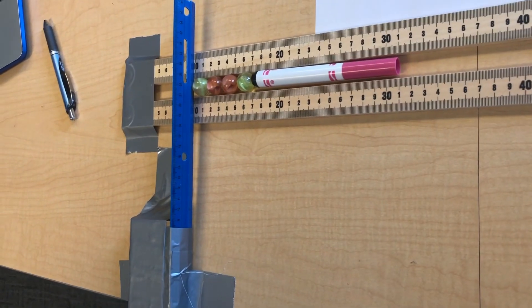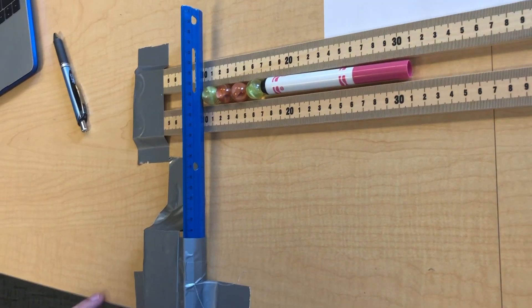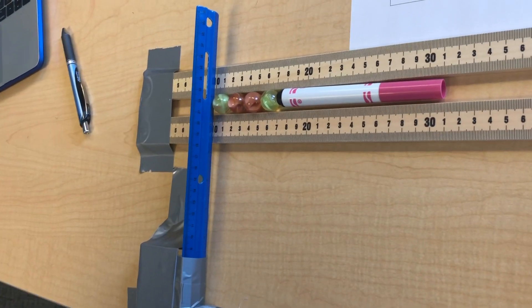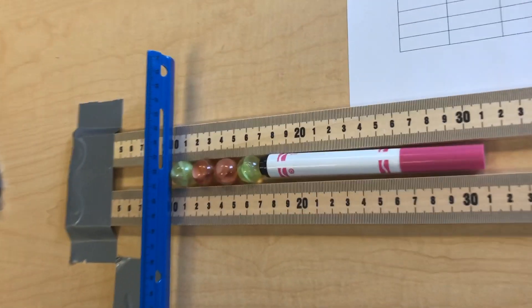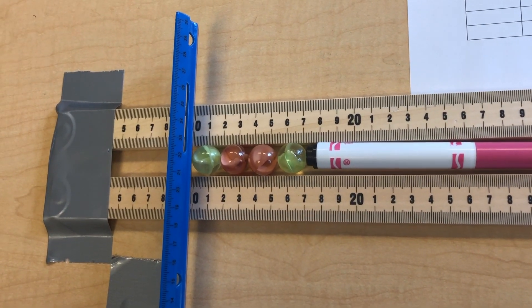Here's our same setup where we have a block taped to a ruler with four marbles and a smooth marker in between two meter sticks. You can see that our ruler is at 10 centimeters.